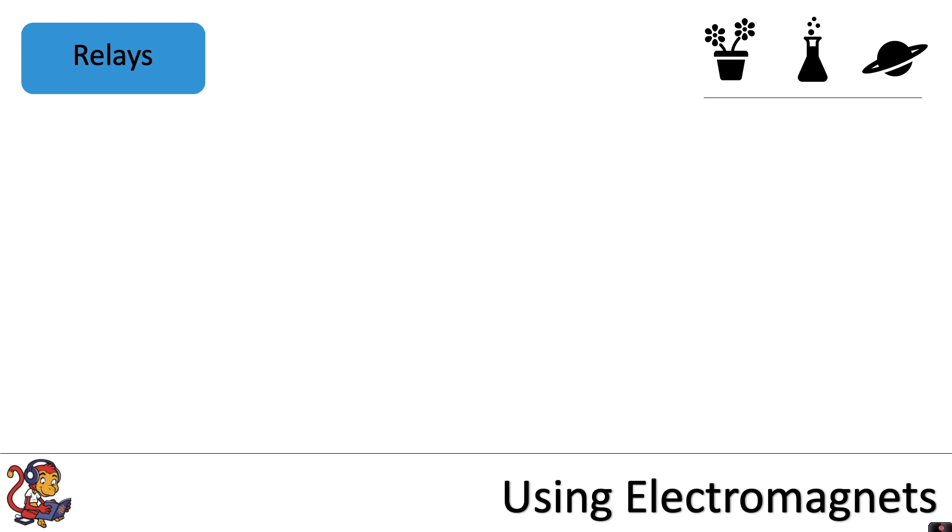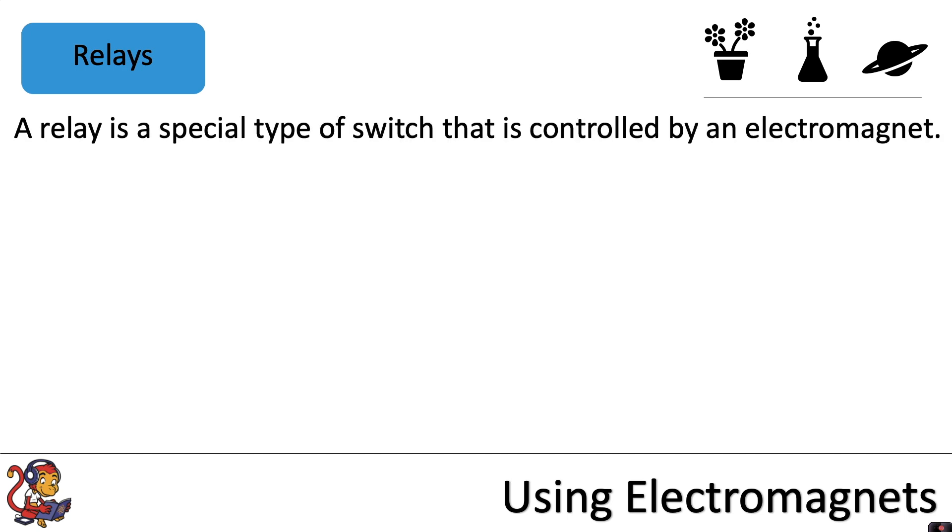Electromagnets are also used in relay circuits. A relay is a special type of switch that is controlled by an electromagnet.